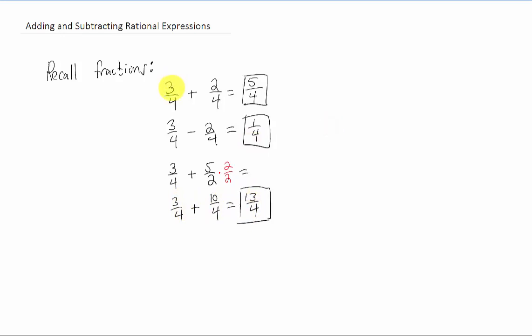The secret is it doesn't matter if the numerator and denominator are numbers or polynomials - the rules are the same. So if we had something like p over q plus n over q, where p, q, and n could be polynomials, as long as the denominators are the same you can just add the two numerators together and keep that same denominator to combine your rational expressions.